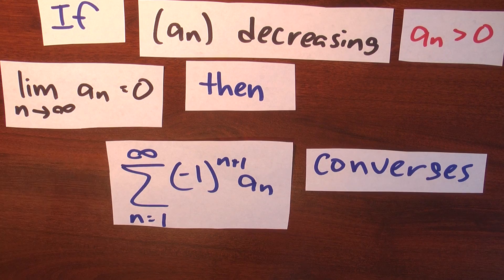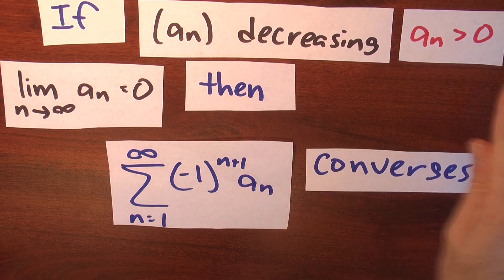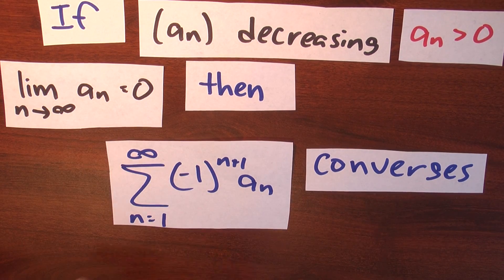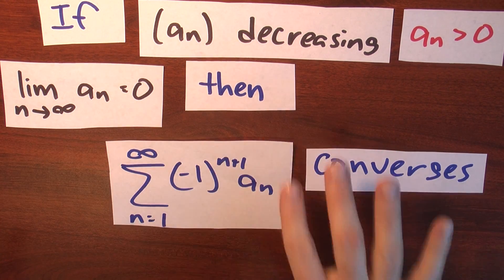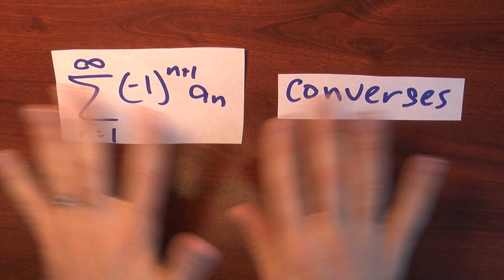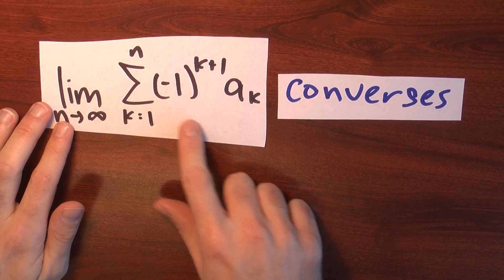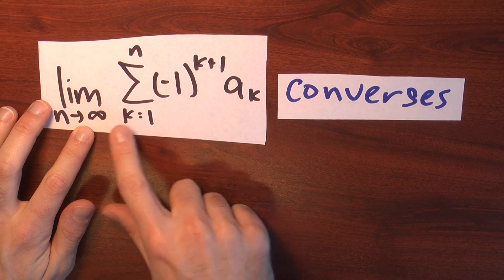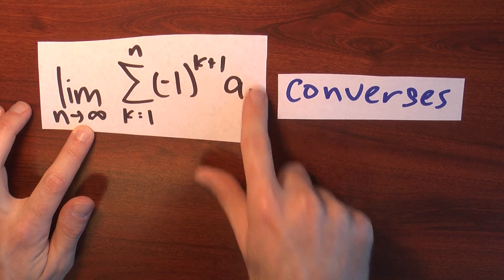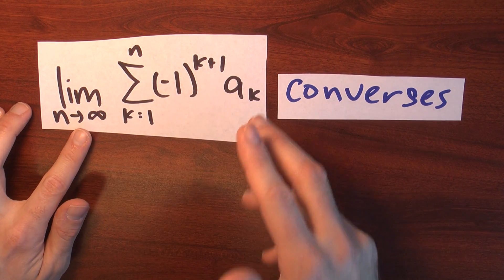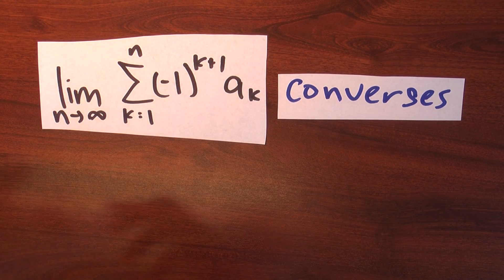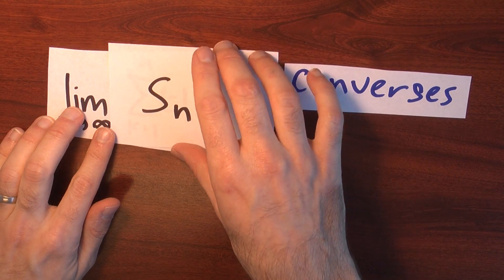I already know that if the limit of the nth term is not 0 the series diverges. So what do I have to show? I start with a sequence that is decreasing, all terms positive, with limit 0, and I want to conclude that the alternating series converges. That means showing the limit of the partial sums S_n — the sum from k=1 to n of (-1)^(k+1) times a_k — converges.